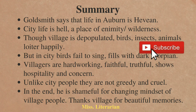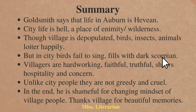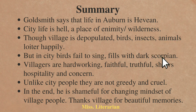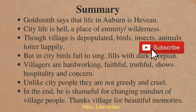Goldsmith talks about the life he had in Auburn, saying that life in Auburn is like heaven but life in the city is like hell — because the city is overcrowded, a place of enmity and wilderness where people never help each other. Whereas in the village, even if people are depopulated, the birds sing happily and animals and insects loiter happily. But in the city, birds fail to sing and he can only observe many dark scorpions. He admires the village and its lifestyle — the people are hardworking, caring, hospitable, faithful, and truthful. They are never greedy or cruel, unlike the city people.